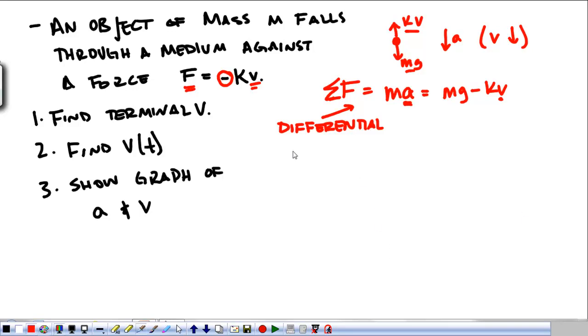Anyway, at terminal velocity, the acceleration is equal to 0 because we have a constant velocity now. So, at that point, you've got Mg minus kv is equal to 0, and that terminal velocity is equal to Mg over k. That's going to be the final velocity of our object.